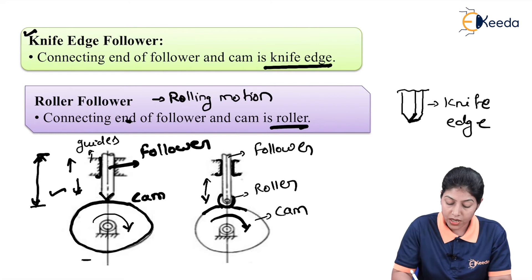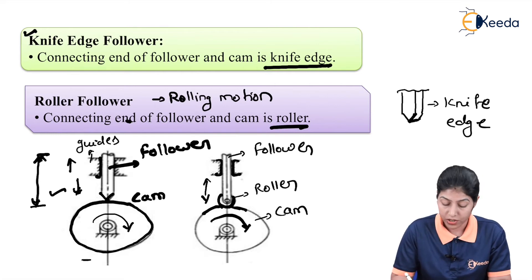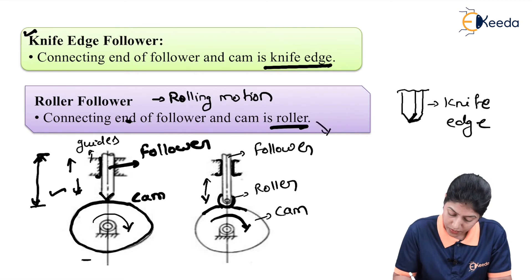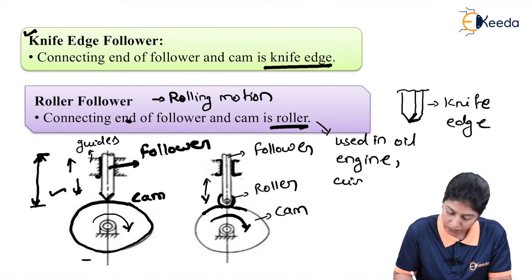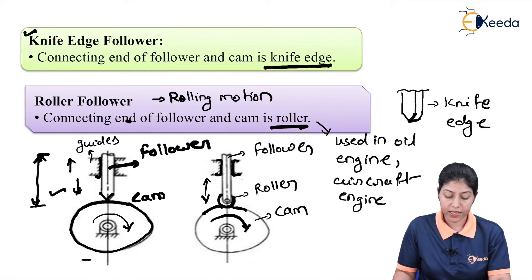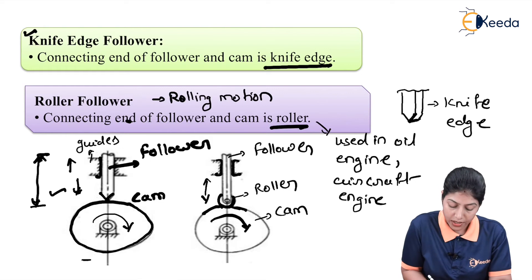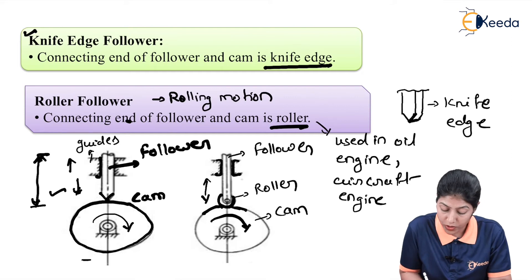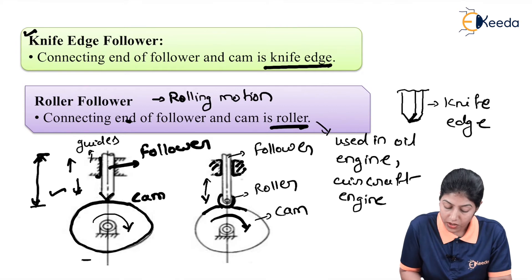This roller follower is generally used in different types of engines like oil engines and aircraft engines. The contact surface is different compared to the knife-edge follower, and as per the contact surface or connecting end, the amount of wear and the amount of side thrust between the follower and the guides will vary.